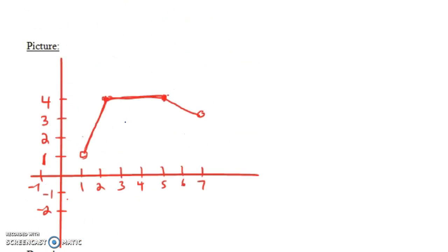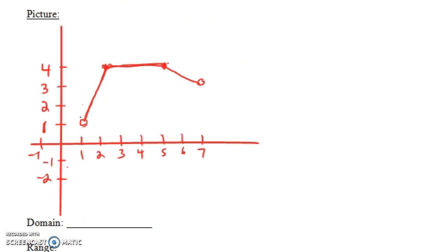Now this example right here is slightly different than the previous one in the sense that notice at the endpoints here we have our open circles. What that means is that those points are not a part of the graph. So 7 is not in the domain of the function, but 6.9 is, and 6.999 is. But 7 isn't, and 1 isn't, because we have these open circles.